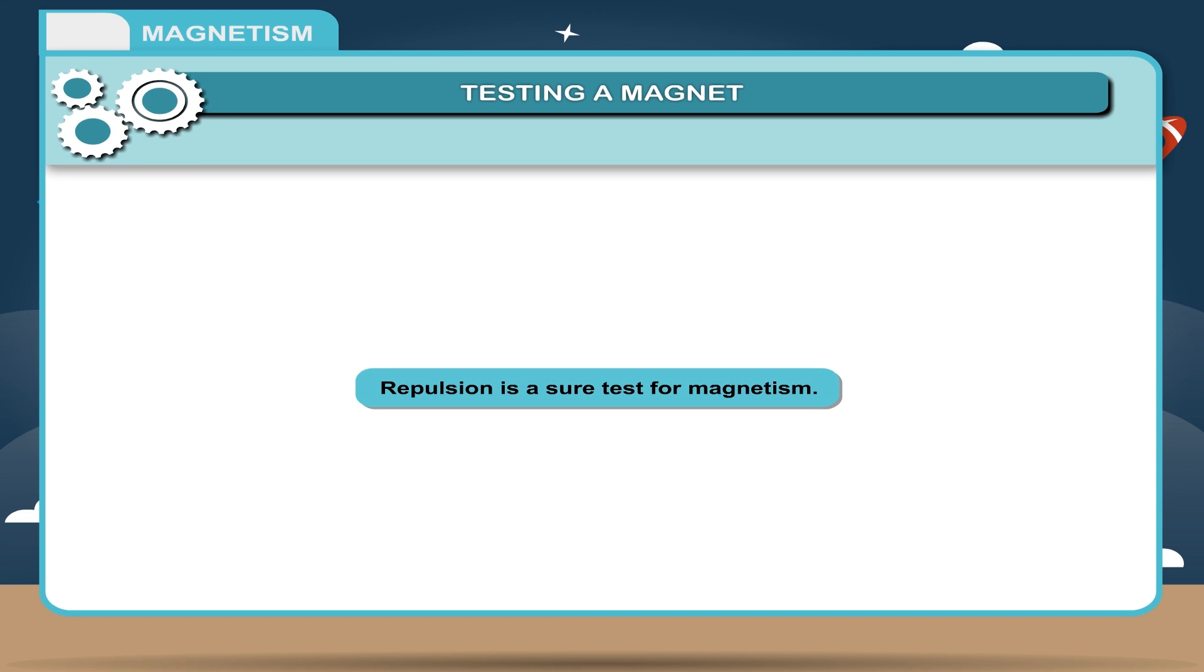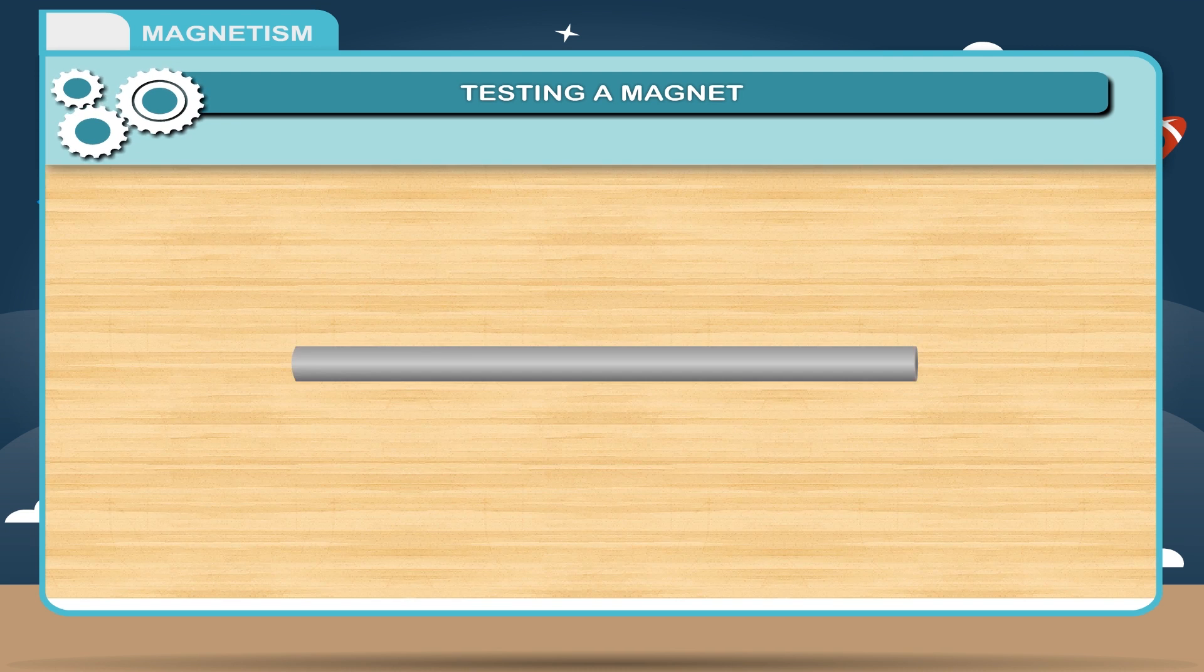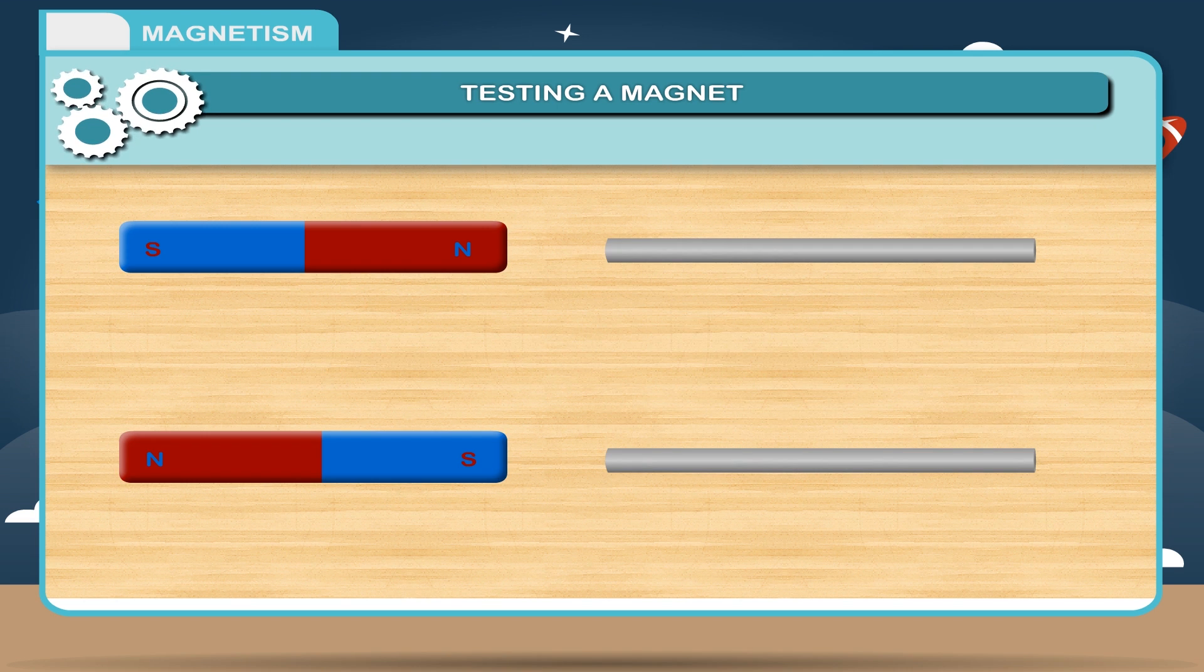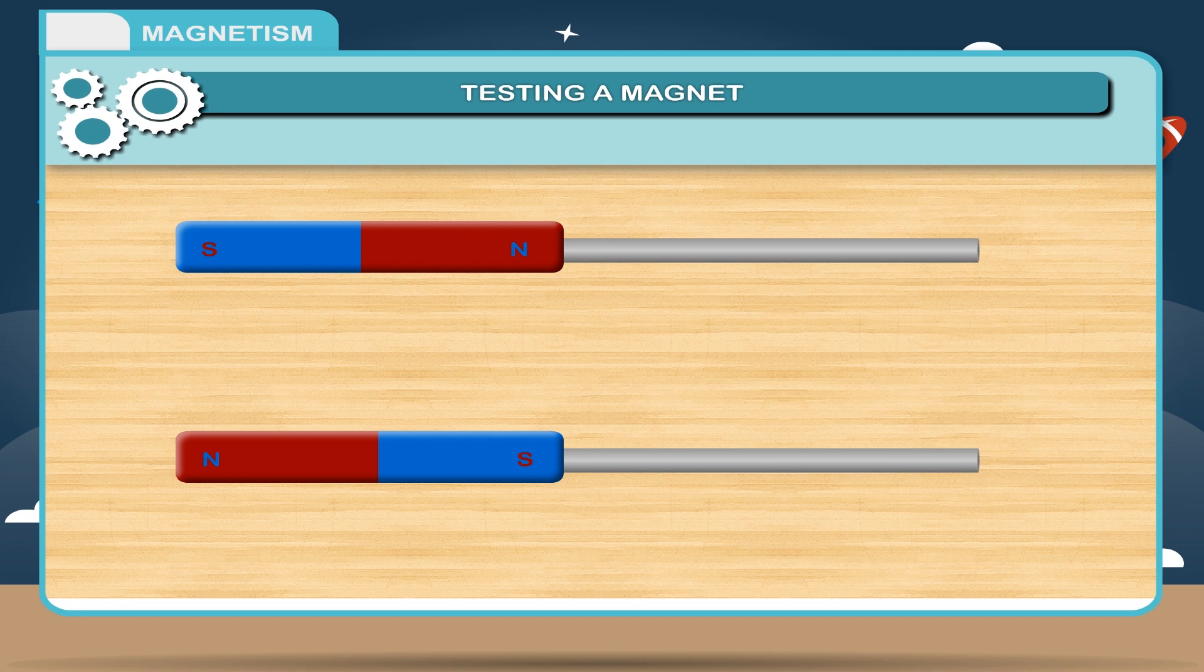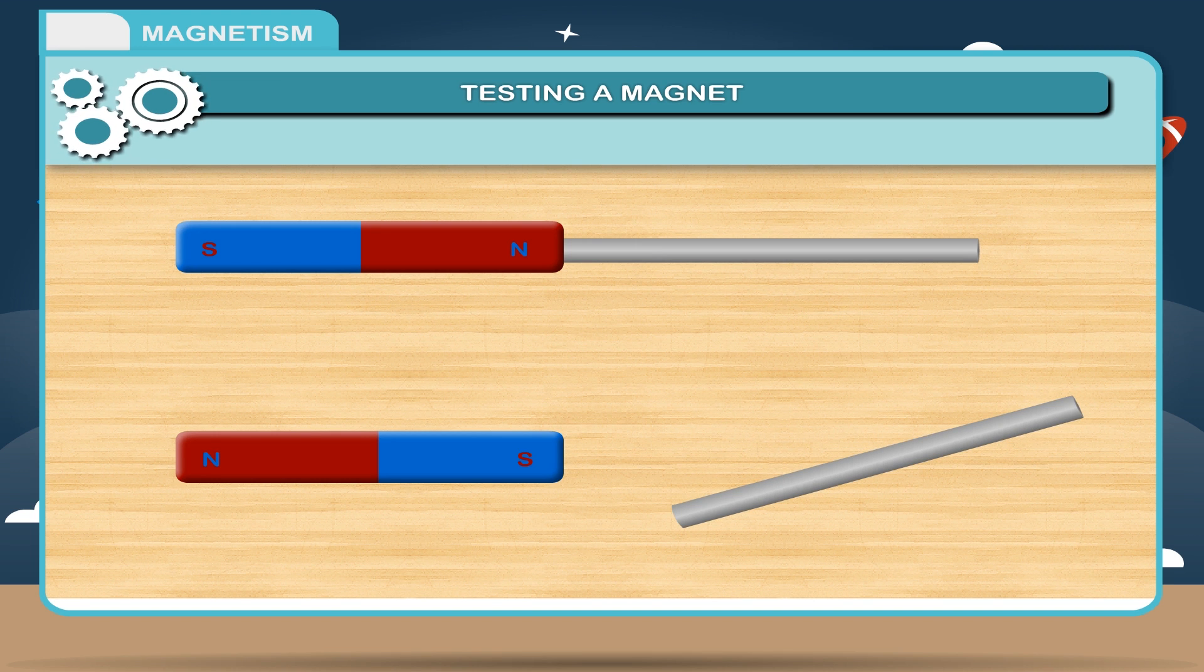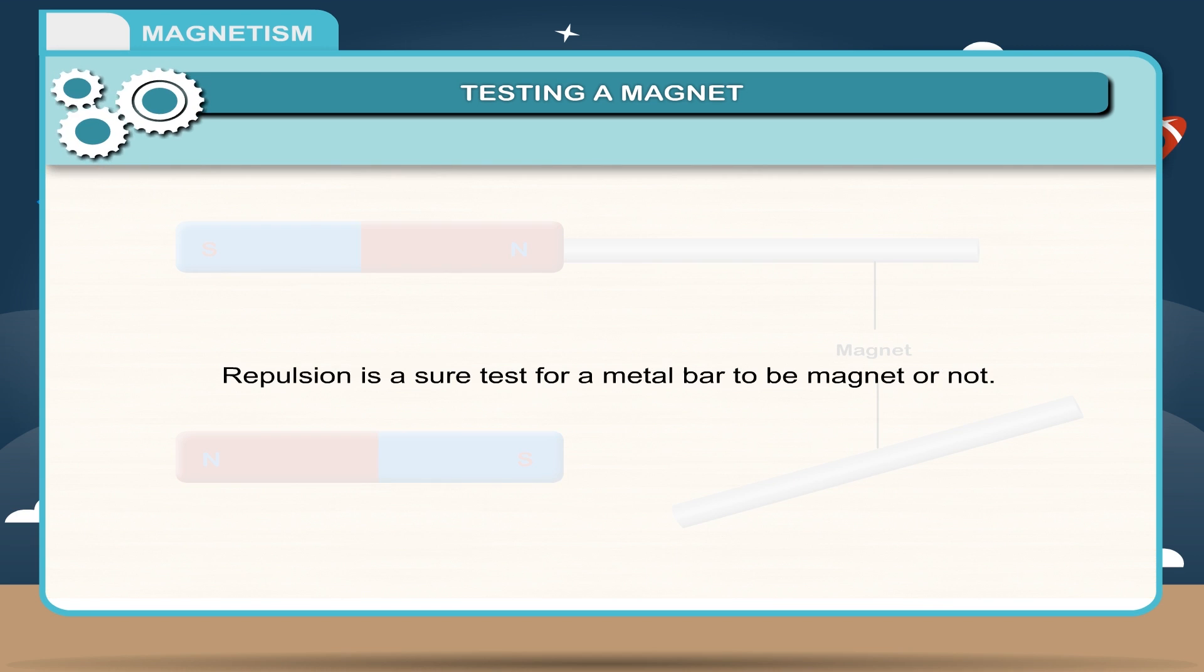Activity: Repulsion is a sure test for magnetism. Take a metal bar. Bring one pole, north or south, of a magnet near the ends of the metal bar one by one. If both ends of the magnet attract, the metal bar is not a magnet. If one end attracts and the other repels, the metal bar is a magnet. Thus, repulsion is a sure test for metal bar to be a magnet or not.